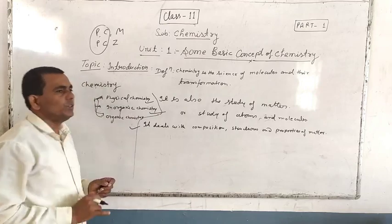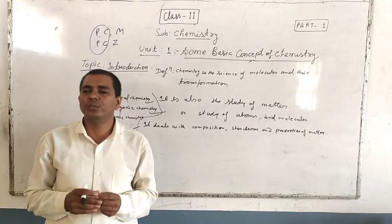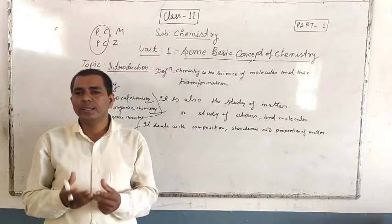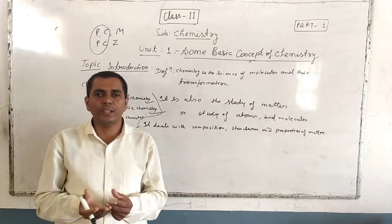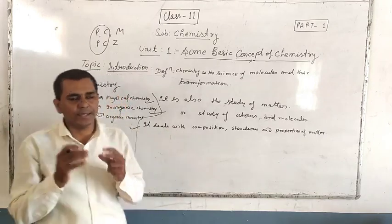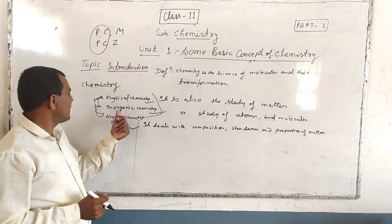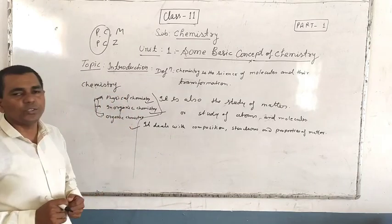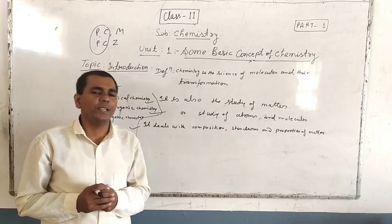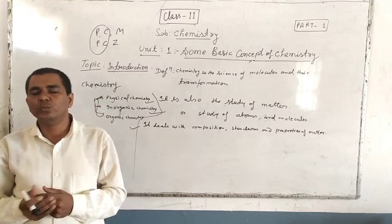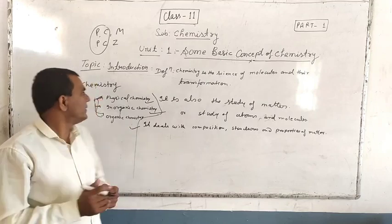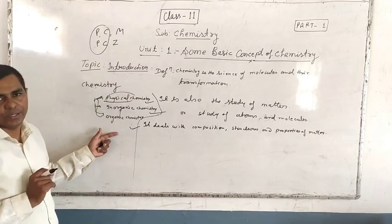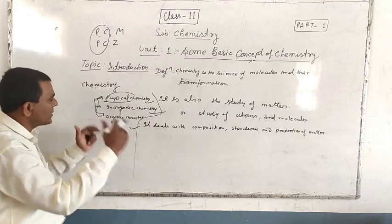Inorganic chemistry deals with all sorts of elements that are parts of the Earth, the elements that are actually made from the elements of the Earth. Then organic chemistry — the components of the composition are made of components which are different from the original inorganic elements.